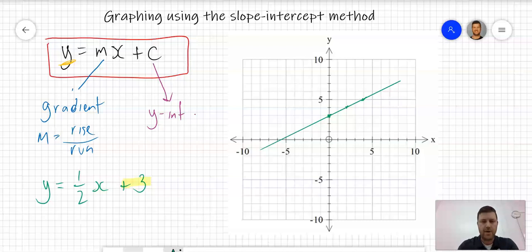Let's do one more example. Let's look at y equals, let's use a negative gradient, so let's do negative 2x minus 1.